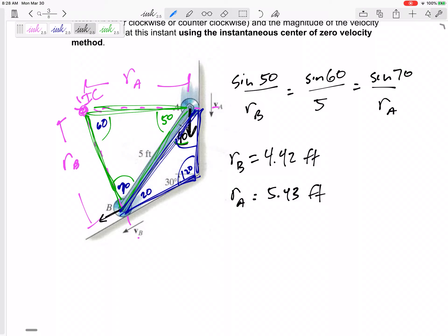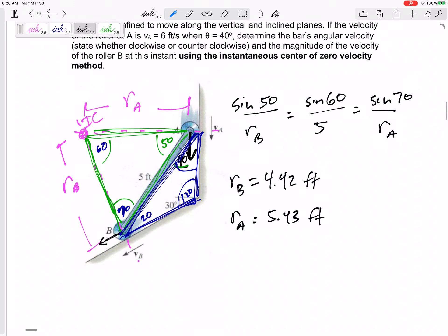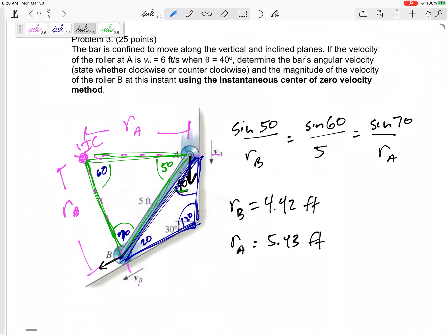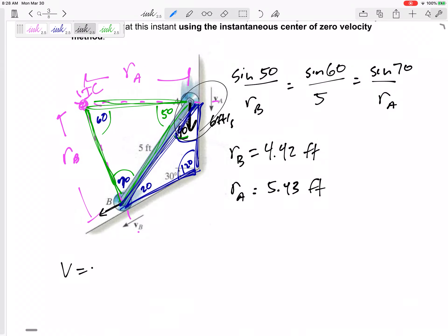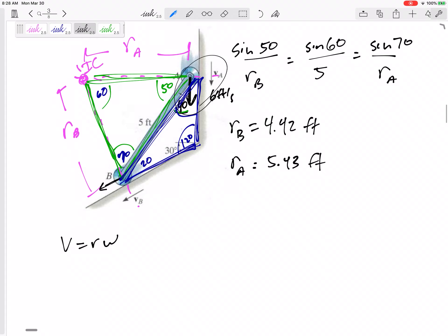And where do I start? Where do I start? Well, you start with which one did we... Were we given? We were given this VA over here is 6 feet per second. So, let's start with VA.